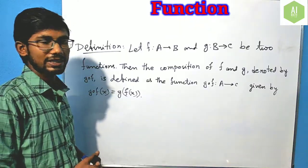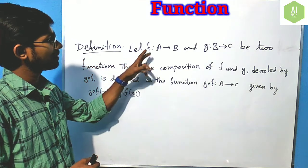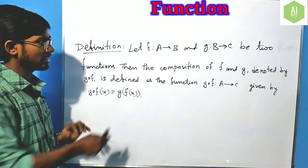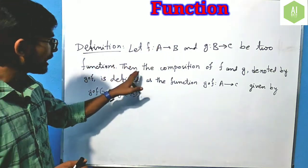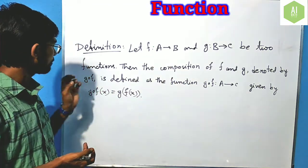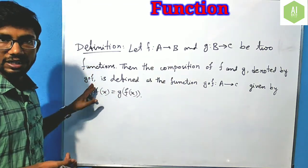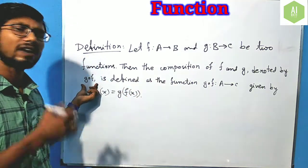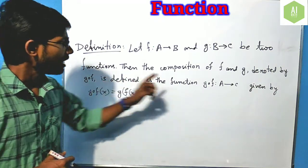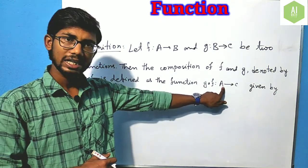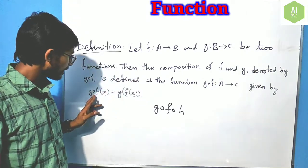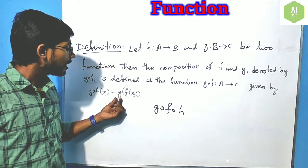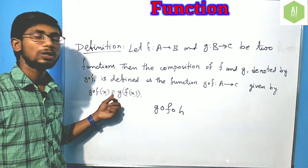Now let's learn the definition. Let f from A to B and g from B to C be two functions. Then the composition of f and g, denoted by g compose f, read as 'g compose f', is defined as the function from domain A to codomain C, such that g compose f of x equals g of f of x.